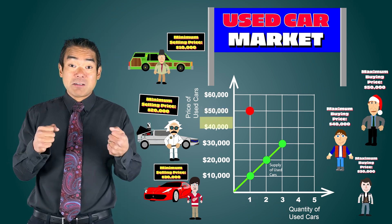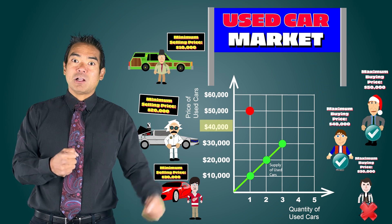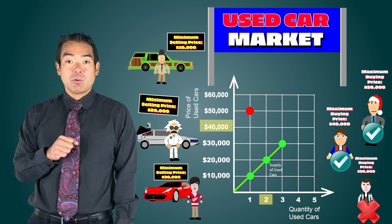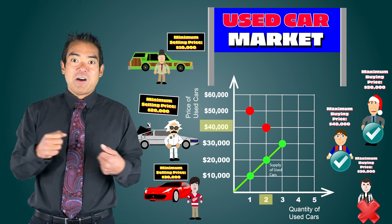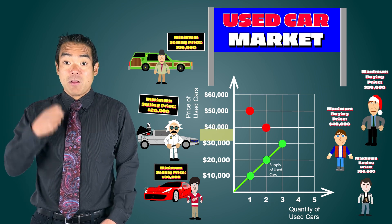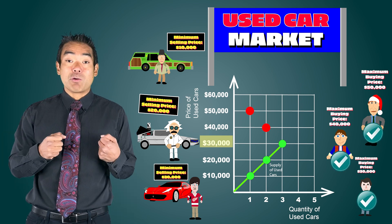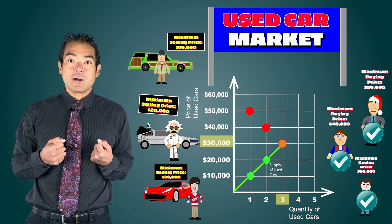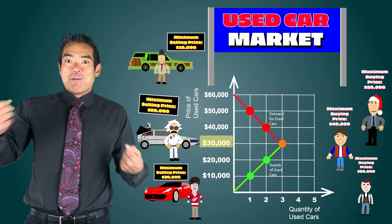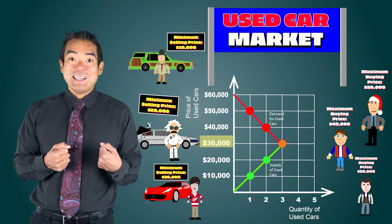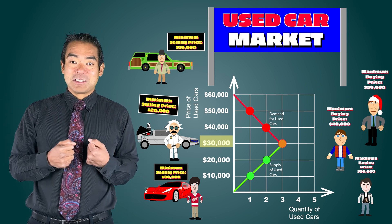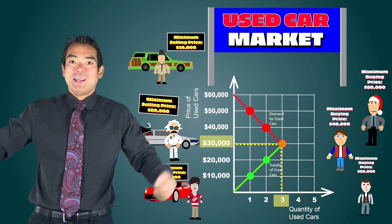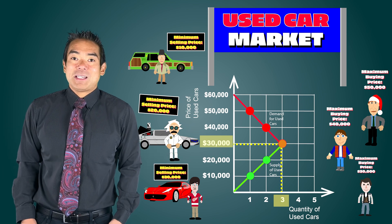At a price of $40,000, both Clark and Marty will buy a car, so two cars will be demanded. And finally, at a price of $30,000, all three buyers become willing to buy. So the market price is $30,000 — three cars get bought, three cars get sold, and everyone is happy.